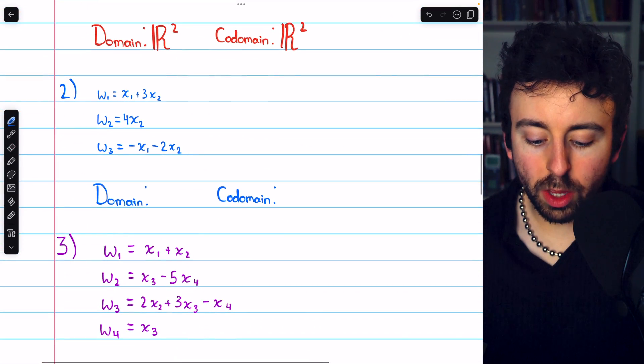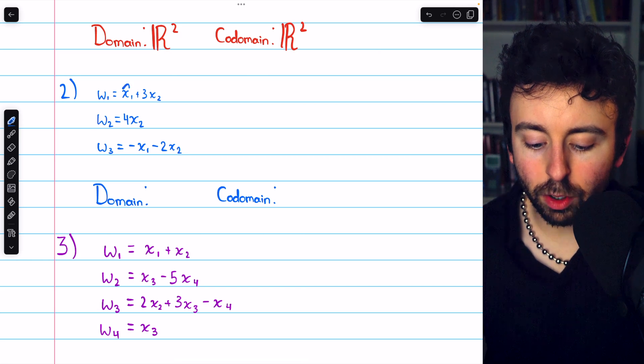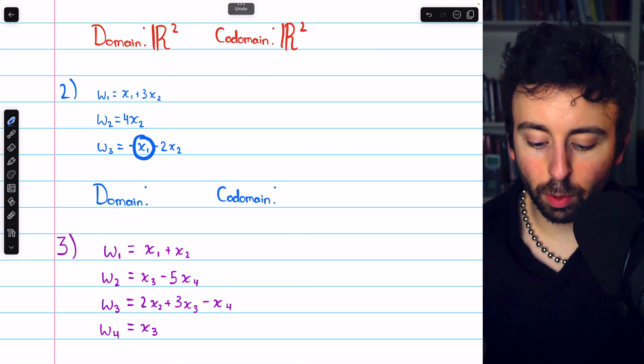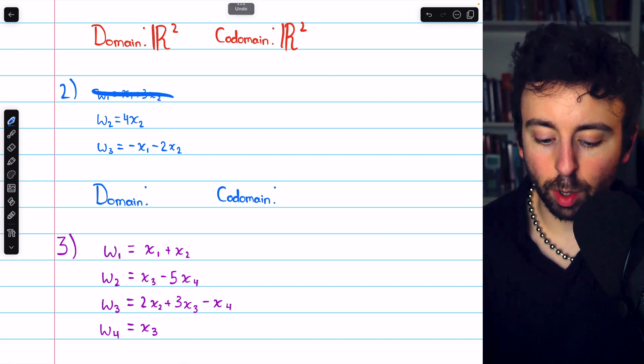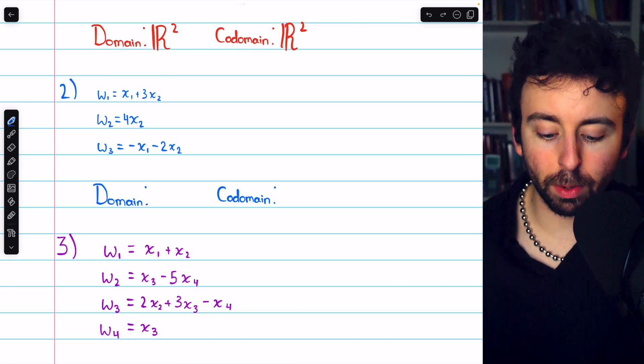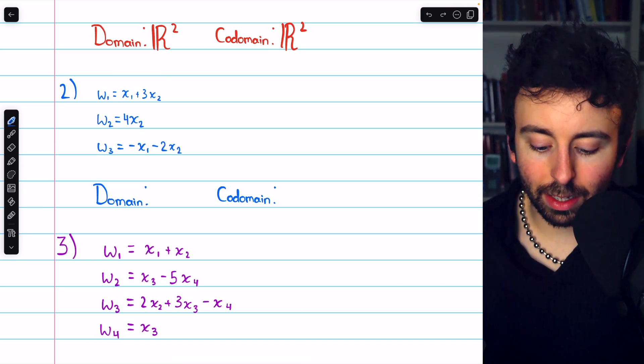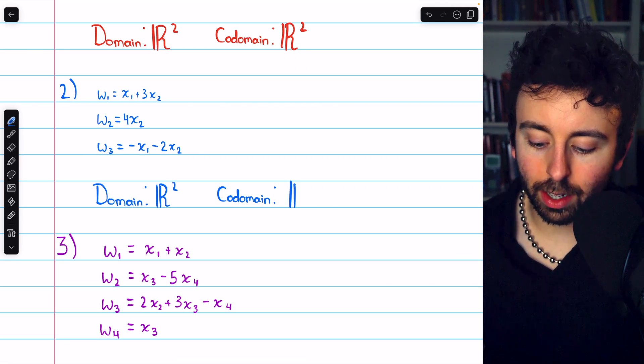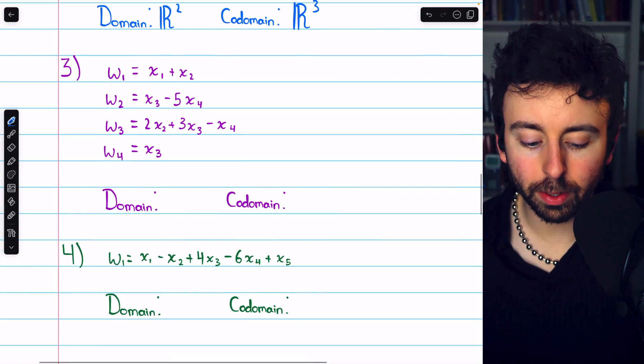Moving on to problem two, you can immediately see that we have two input variables, x₁ and x₂. x₂ here, x₁ and x₂ here, but we have three equations. One equation describing how to obtain each component of the output vector. So the domain is R², we have two input variables. The codomain is R³, we have three output variables.